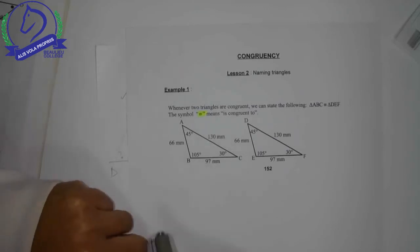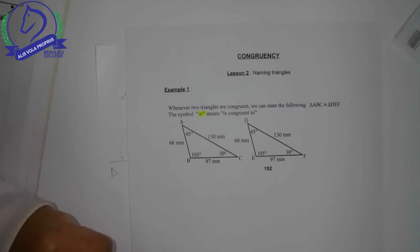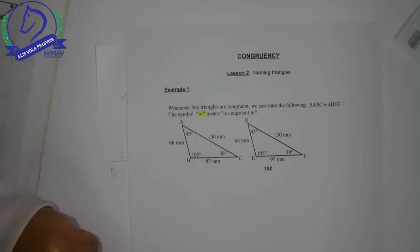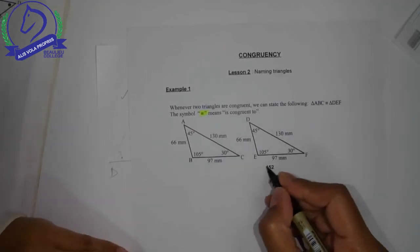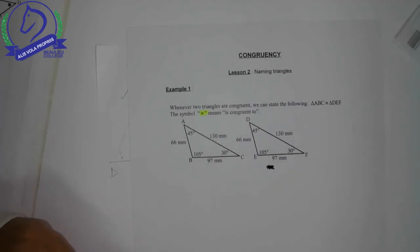So what we have here is triangle ABC with information, numerical values, and triangle DEF. Those are the two triangles.